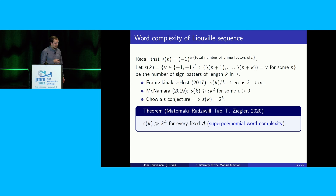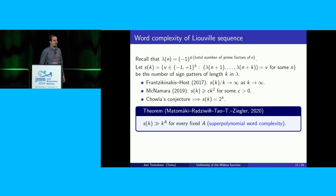The earlier result of Matomäki, Radziwiłł, and Tao about averages of the Chowla conjecture required k different averaging variables, whereas here we only require one averaging variable. The application to word complexity states that if you look at the number of different length-k patterns in the Liouville sequence — denoted by s of k — we proved that the number of patterns grows super-polynomially in k. If we had Sarnak's conjecture, each of the 2^k different patterns of length k would appear. We improved on earlier work which gave a quadratic lower bound for this complexity.